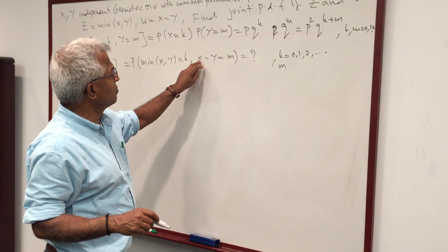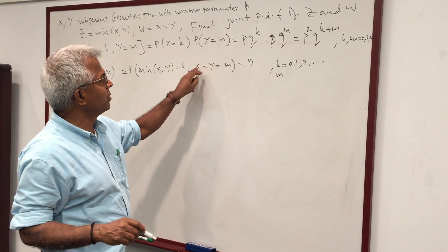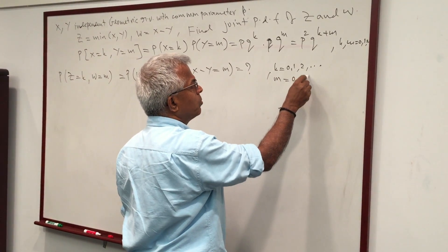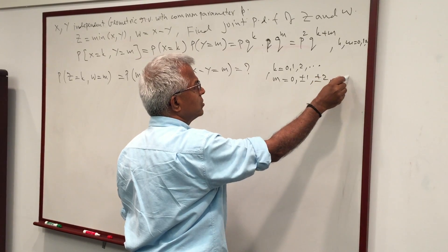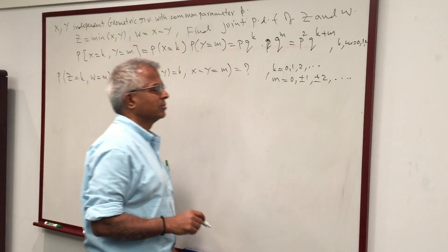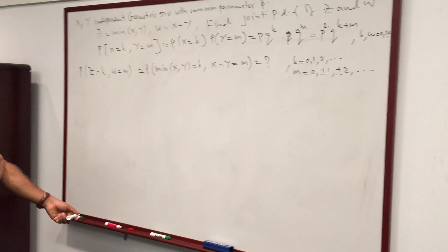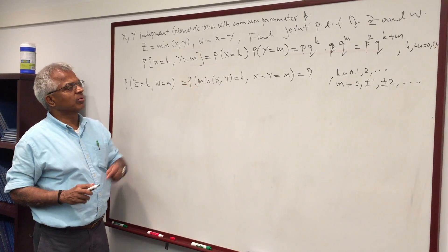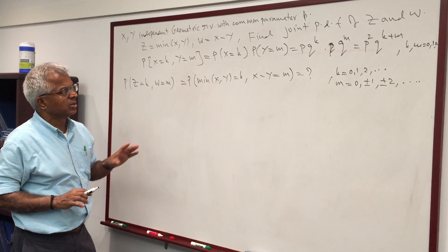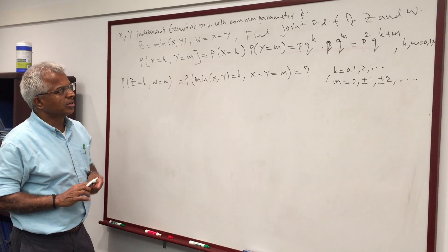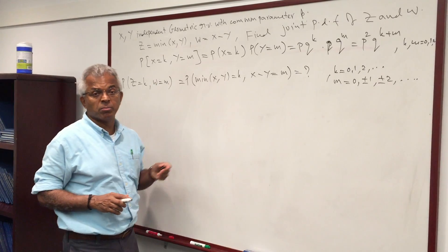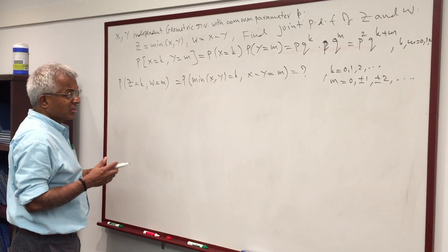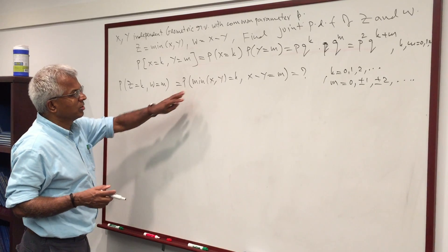So M takes all values 0, ±1, ±2, etc. That's the range of those values. Now especially when you have non-linear functions like minimum and maximum, it's best to condition on X greater than Y and X less than Y.